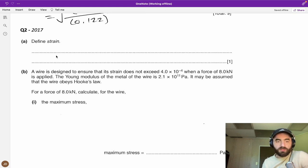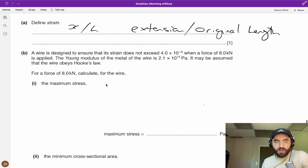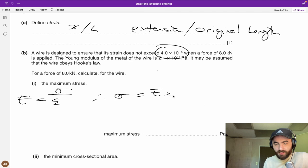Let's do some stuff on stress and strain and Young's modulus. Define strain - as you'll see on the worksheet, strain is just x over L, which is extension over the original length. A wire is designed to ensure that the strain does not exceed this amount when 8000 newtons is applied. They're giving us the Young's modulus. Calculate the maximum stress. We have Young's modulus equals stress over strain. We're given the strain and the Young's modulus. Therefore the stress will be equal to E times strain, Young's modulus times strain.